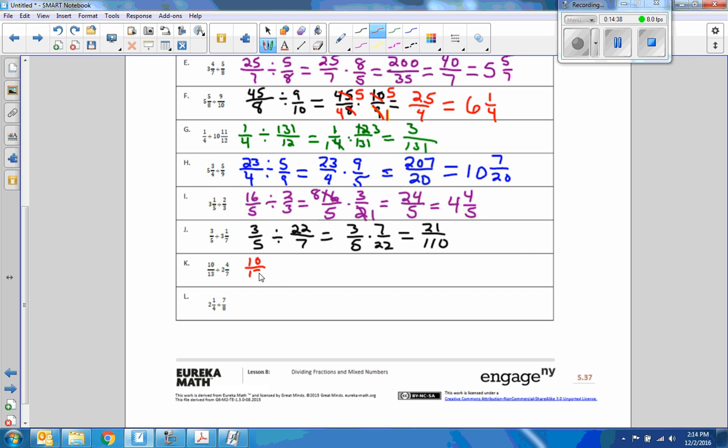Ten over 13 divided by seven times two is 14 plus four is 18 over seven. Equals 10 over 13 times seven over 18. Let's reduce this first. Two will go into ten five times, two will go into 18 nine times. Five times seven over 13 times nine equals 35 over 117.